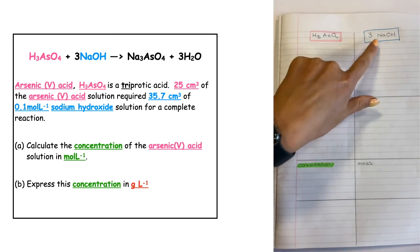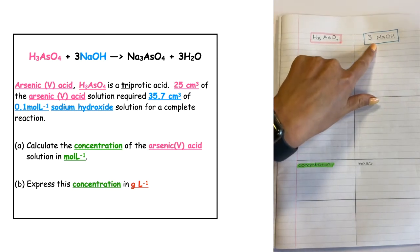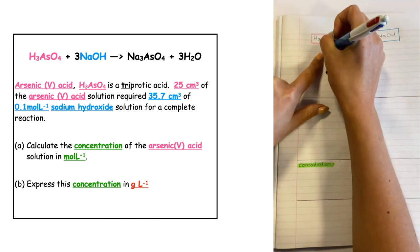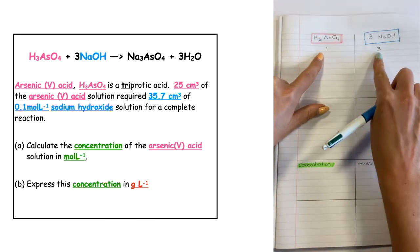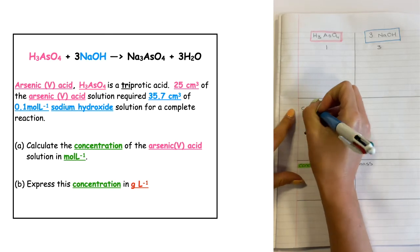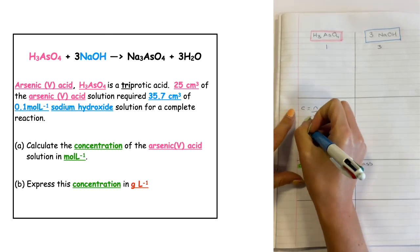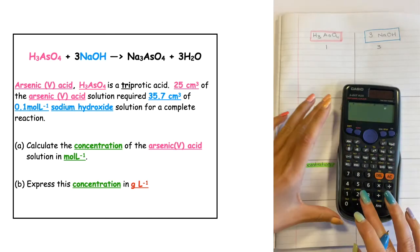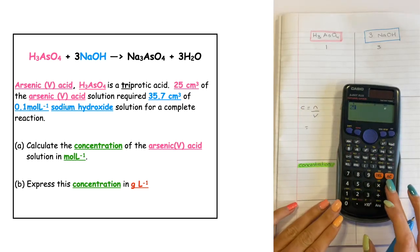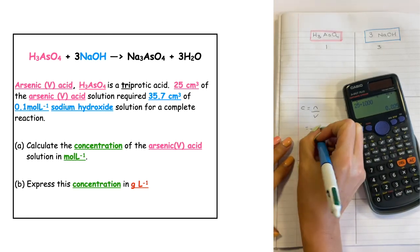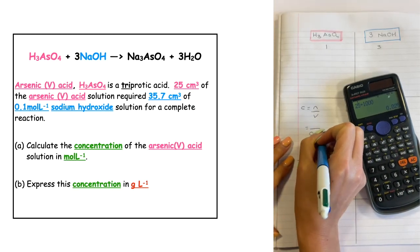First, we look at the balanced equation. We have our acid reacting with three NaOH, so the mole ratio is one mole of acid to three moles of sodium hydroxide. Concentration equals number of moles over volume. The volume of acid given is 25 centimeters cubed, so we do 25 divided by 1000 to convert to liters, giving 0.025 liters.